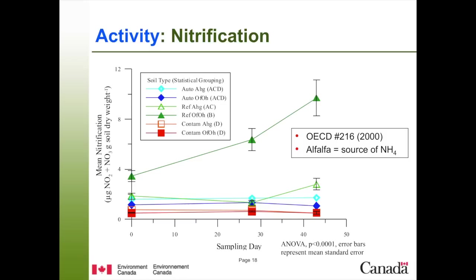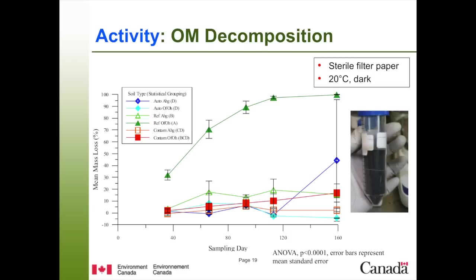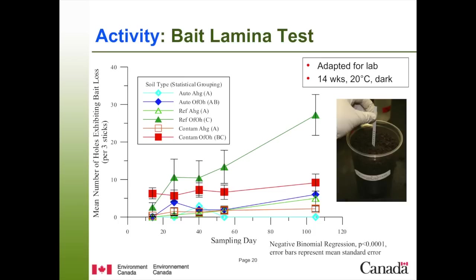Organic matter decomposition was tested by sandwiching filter paper between soil, maintaining consistent moisture content over 180 days, and sampling. The reference OFOH had the highest amount of organic matter decomposition, while both the contaminated horizons and the reference AHG were not significantly different from the autoclave soil. The bait lamina test uses plastic sticks with bait placed in holes — we look at how many holes are eaten over time. The reference OFOH had the highest amount of bait consumption, while the contaminated horizons and reference AHG were not significantly different from the autoclave soil.